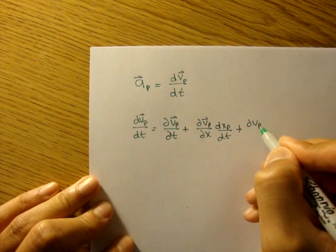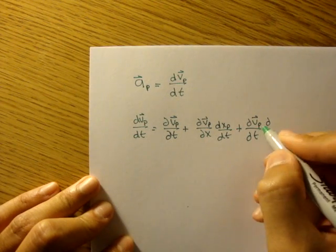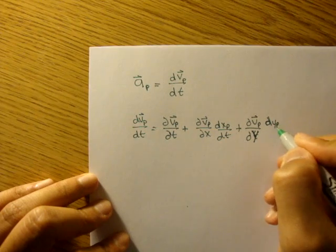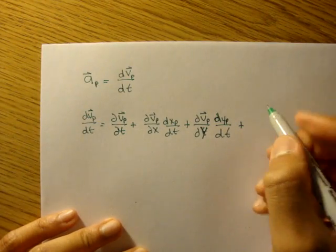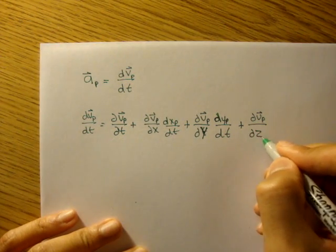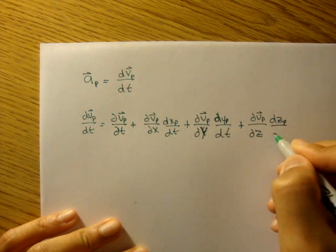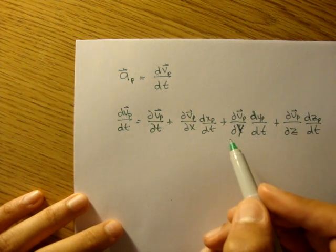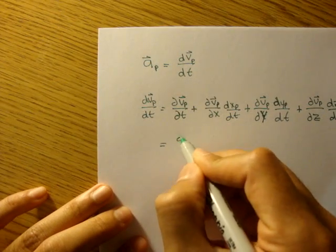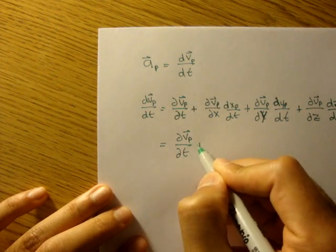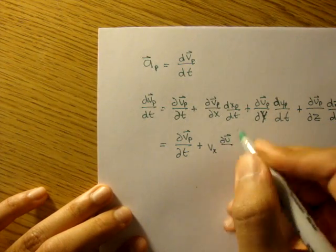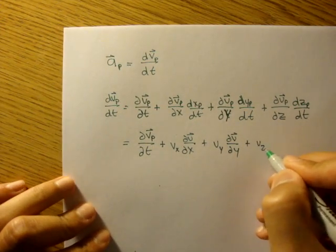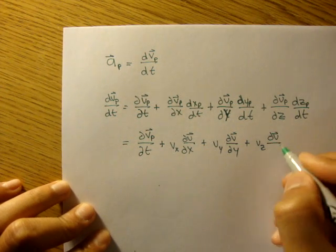Plus the partial of the velocity with respect to y times dy/dt, plus the partial of the velocity with respect to z times dz/dt. We can simplify this a little bit more and rewrite this as the partial of the velocity with respect to time, plus vx times the partial of v with respect to x, plus vy times the partial of v with respect to y, plus vz times the partial of v with respect to z.